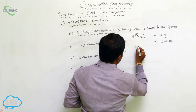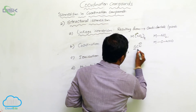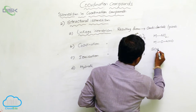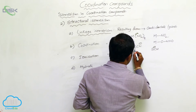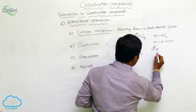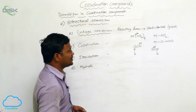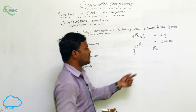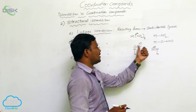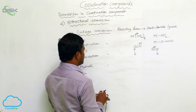Similarly, in the case of thiocyanide, sulfur may bind with the metal complex, while nitrogen can also form a coordination covalent bond with the metal atom or ion. These two examples — NO2 and thiocyanide — both stand as examples of linkage isomerism.